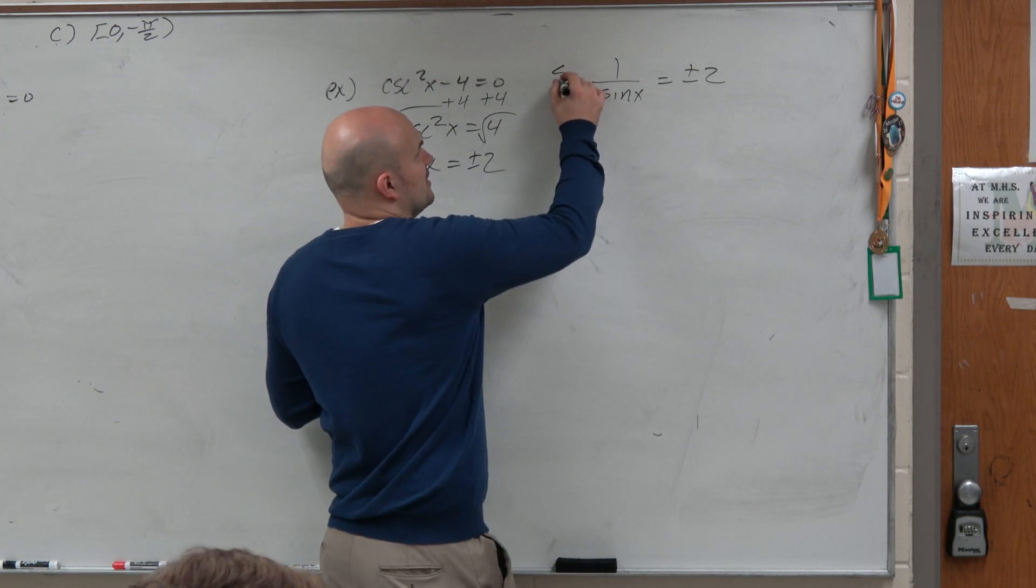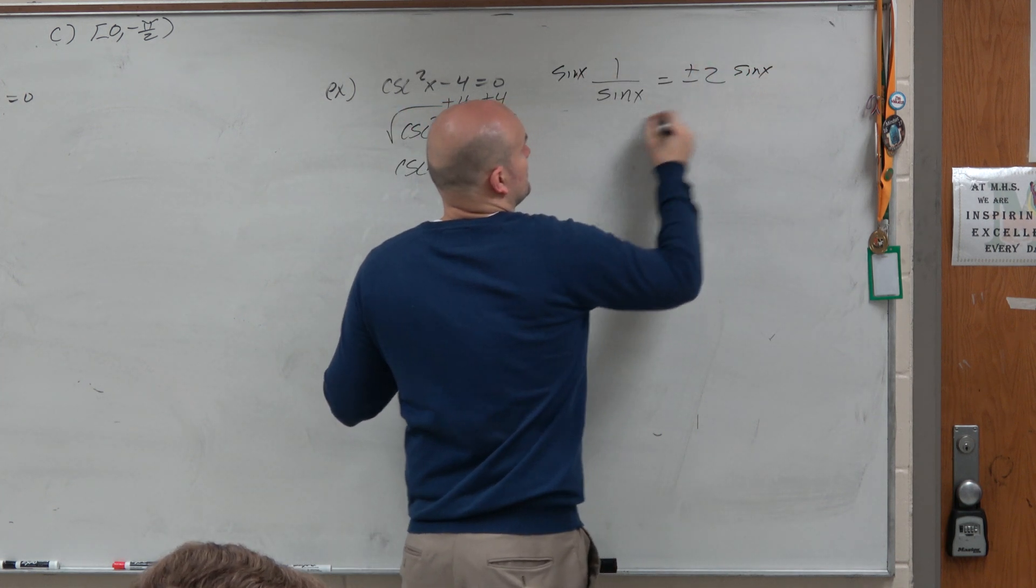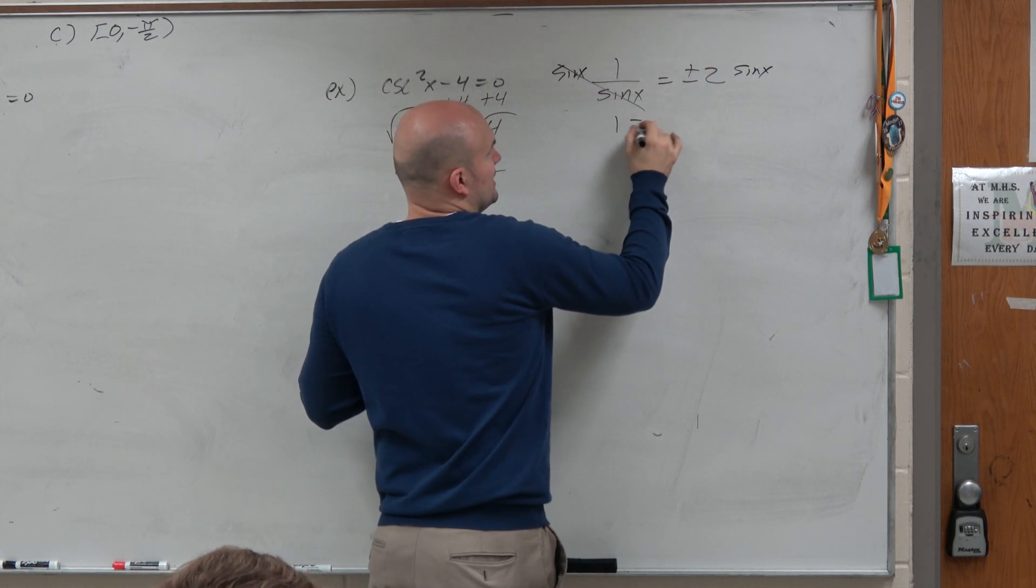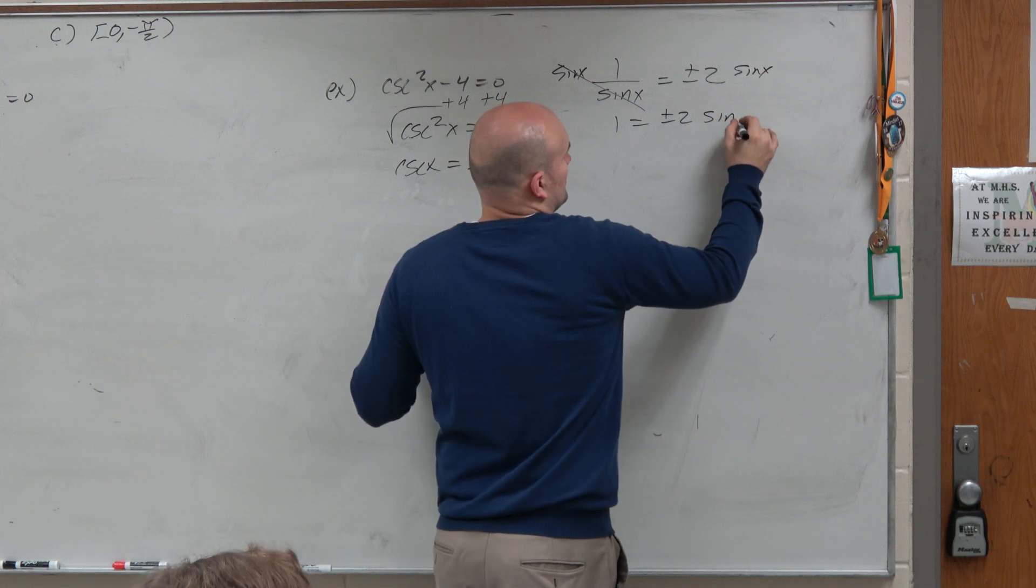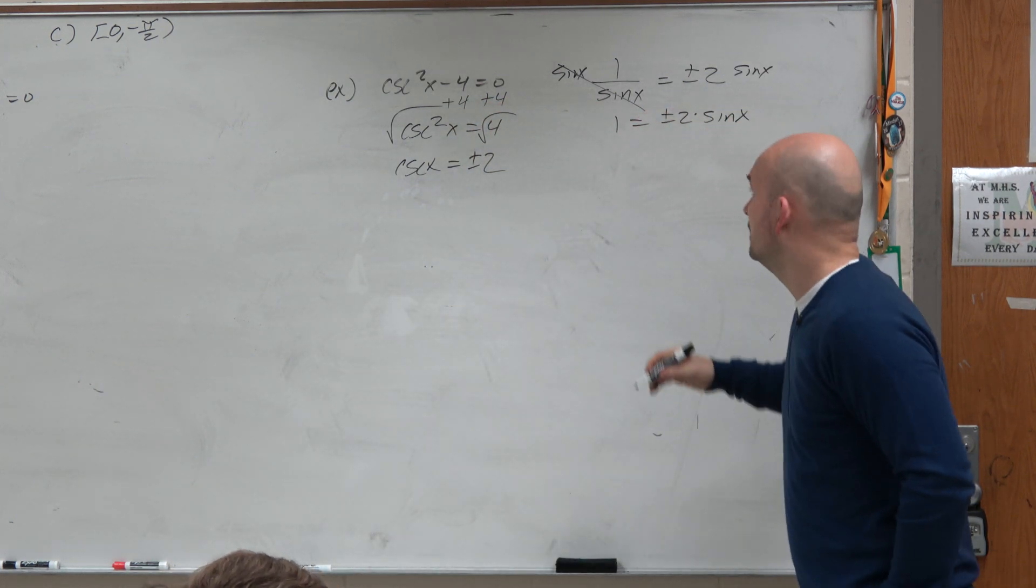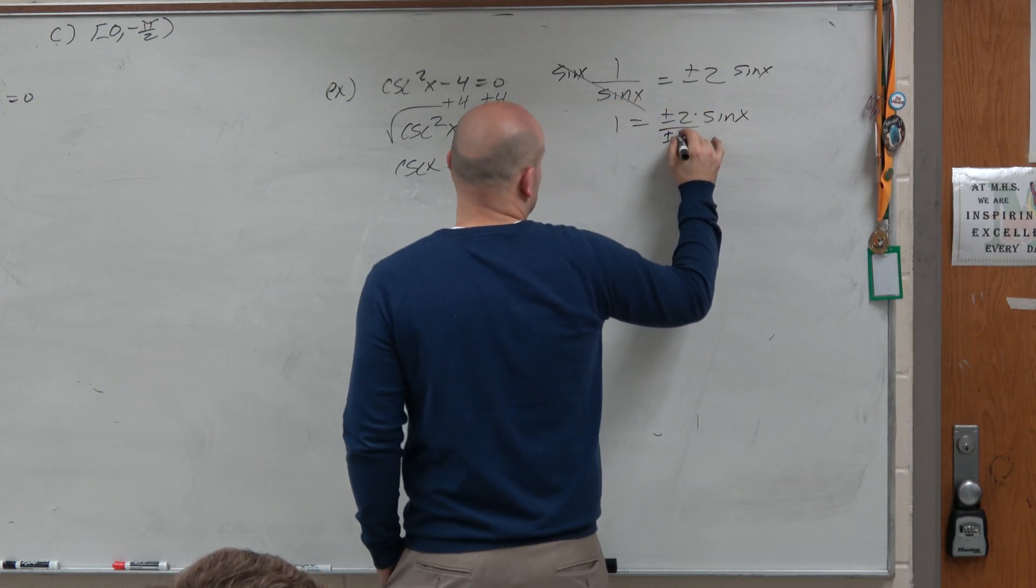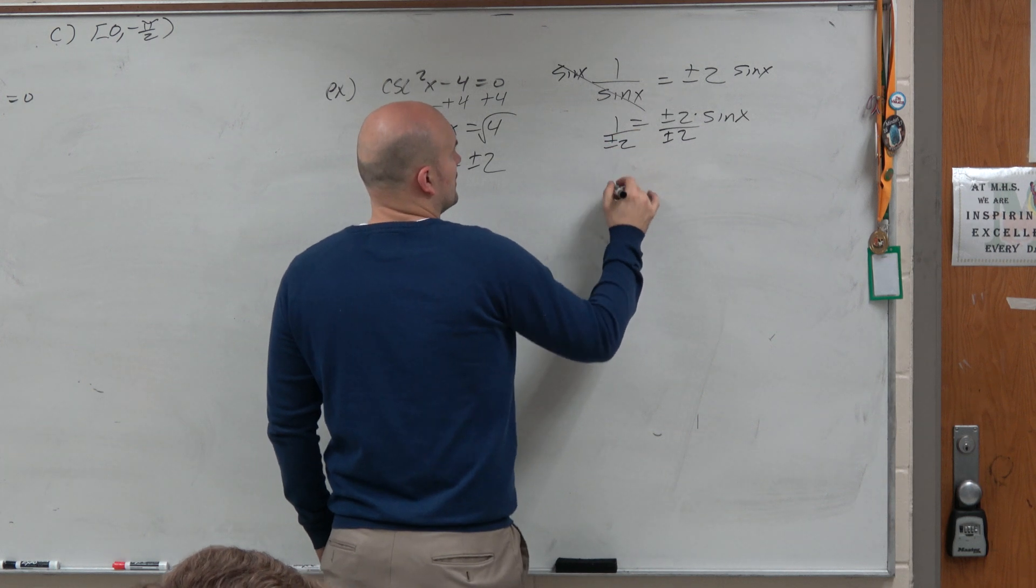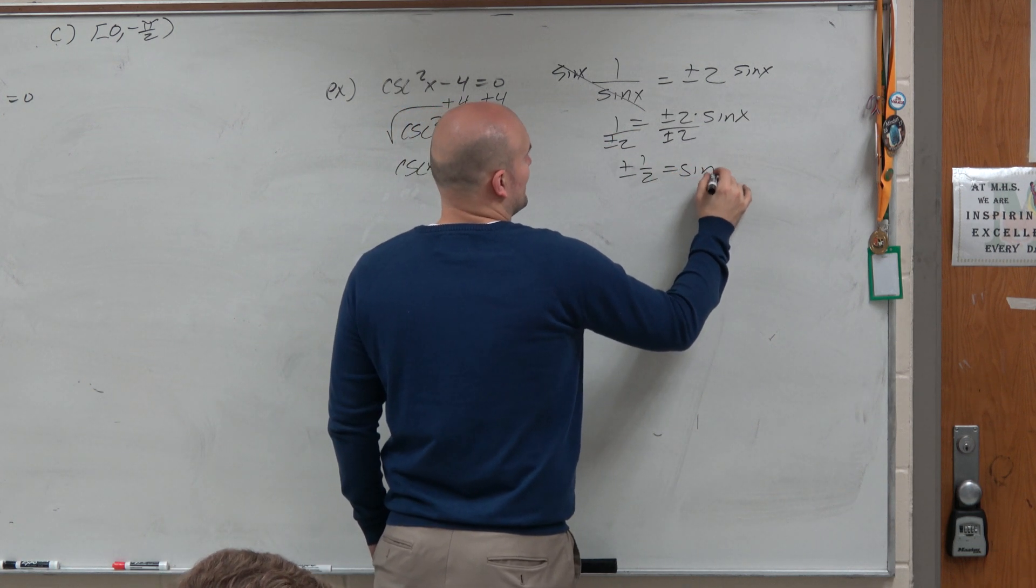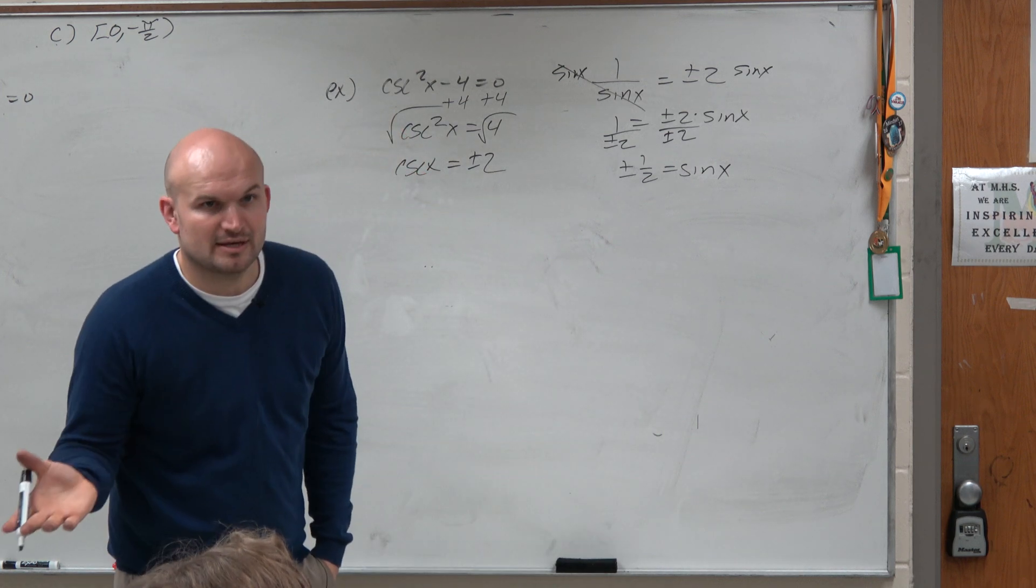And then, if you solve for sine of x, you get 1 equals plus or minus 2 sine of x. And then divide by plus or minus 2. And you get plus or minus 1 half equals sine of x. That's one way to think about it.